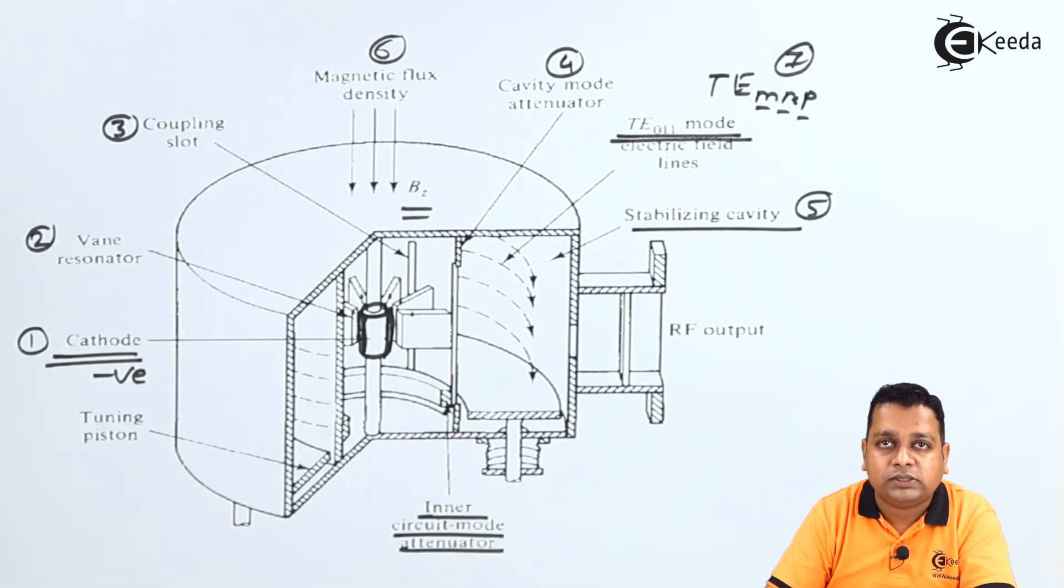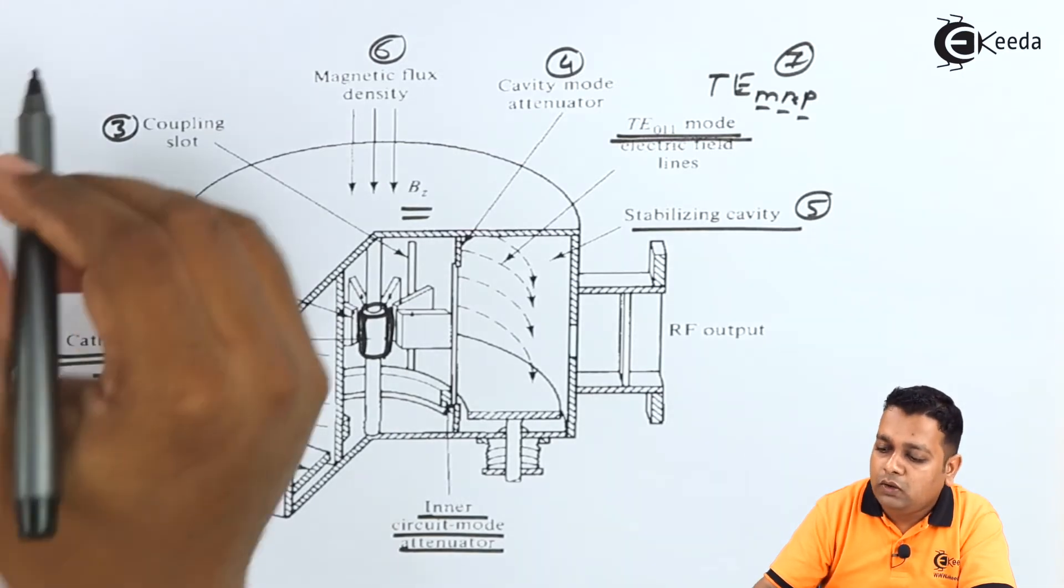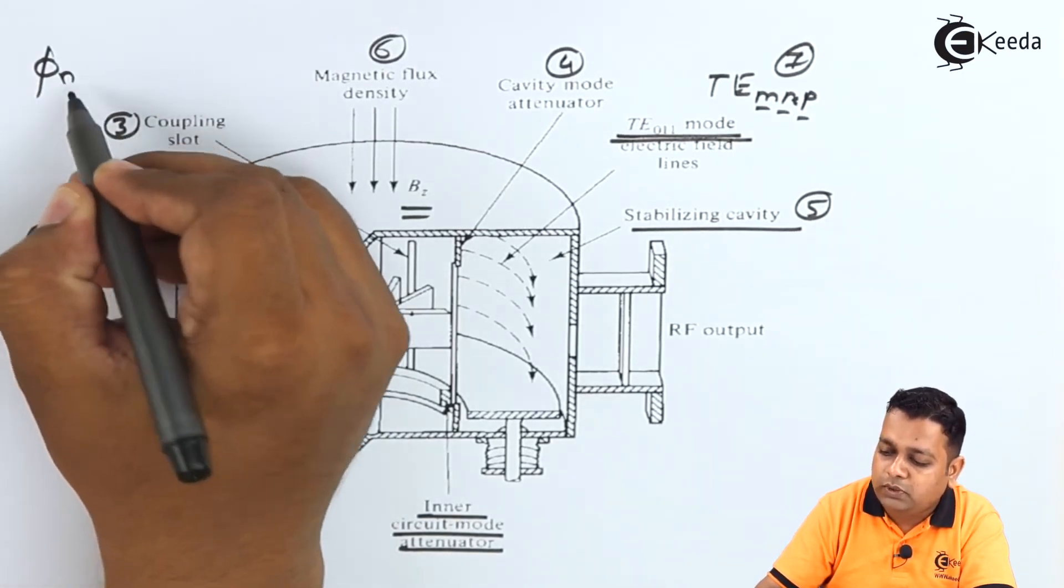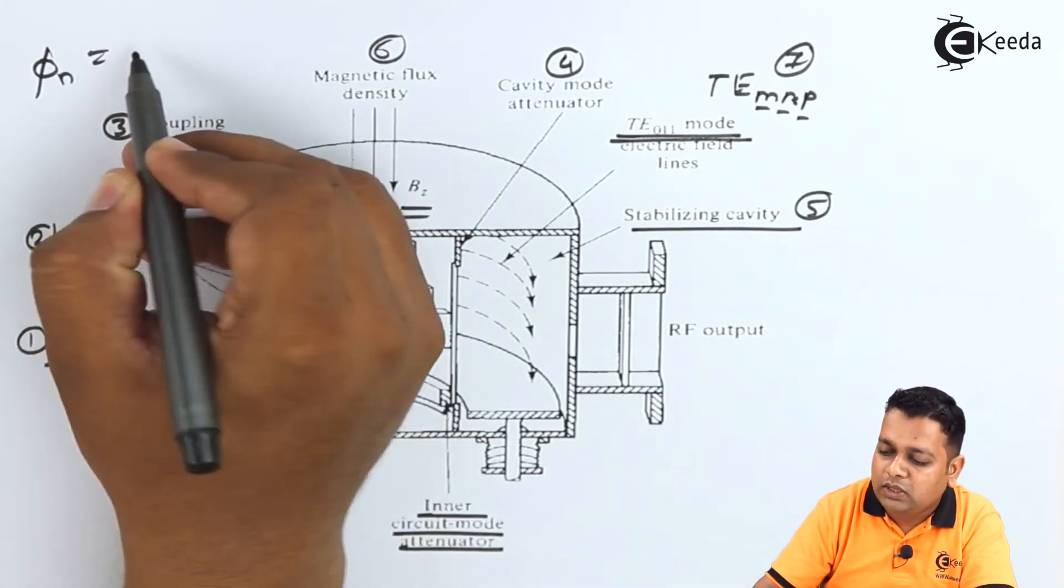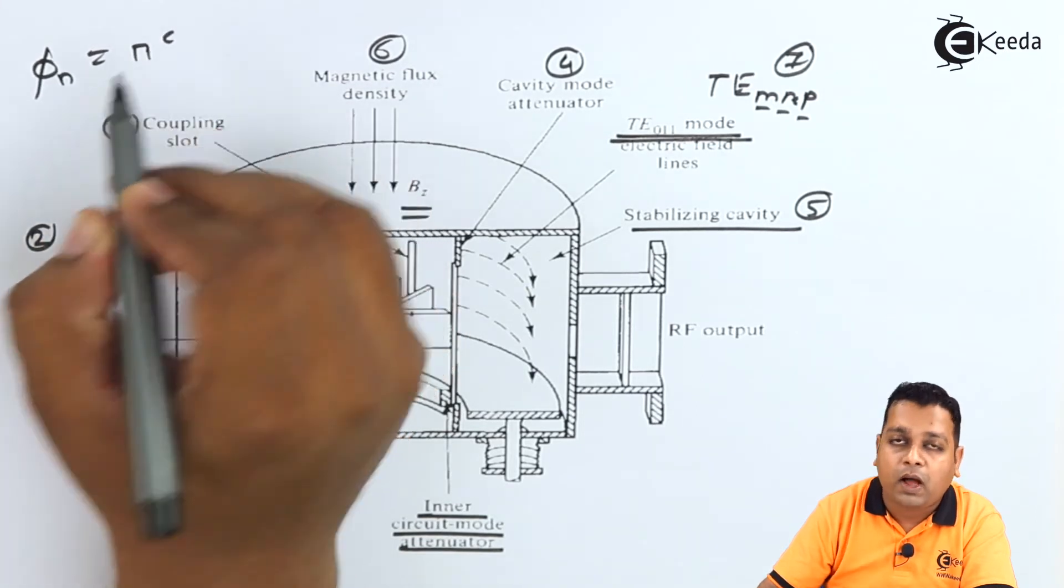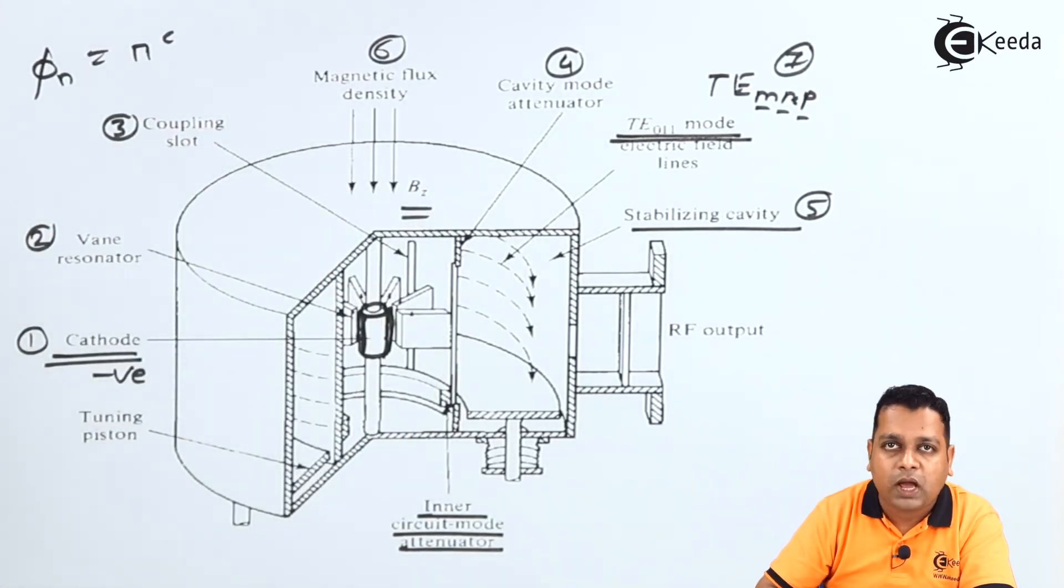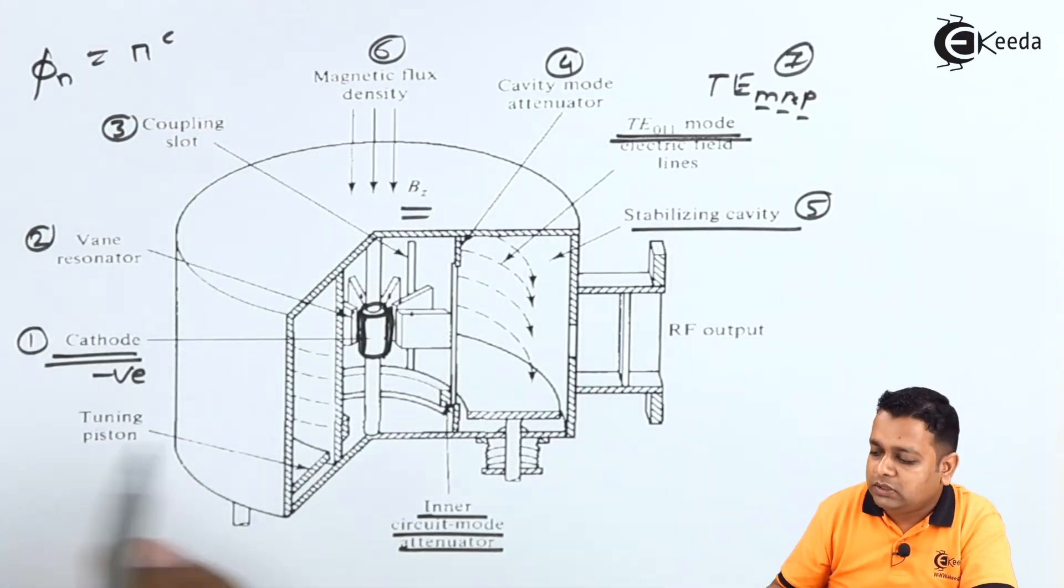And to have the operation of this particular magnetron, so that we adjust the velocities of the electron beam with the phase velocity, it will be starting to oscillate here. The very popular condition of the pi mode of oscillation can be treated where the phase shift between the adjacent cavities, adjacent resonant cavities can be selected to be of pi radians here. So pi mode of oscillation can be generated here.